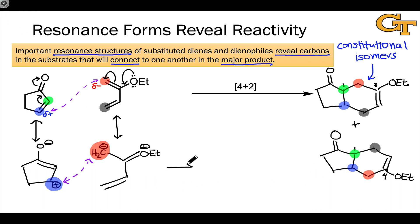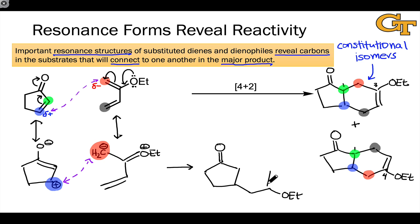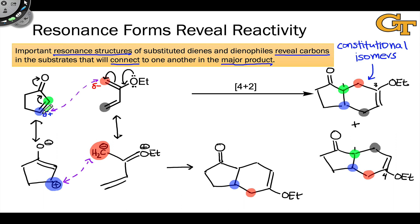To draw the major product, we flip either the diene or dienophile. The carbon highlighted in blue links up with the carbon highlighted in red — one carbon away from the ethoxy substituent — so the ethoxy substituent ends up here, the double bond of the new cyclohexene ring forms here, and the unsubstituted end of the diene ends up adjacent to the green carbon. The key bond formed is between the blue electrophilic carbon in the dienophile and the red nucleophilic carbon in the diene. By default, the green and black carbons will link up as well.